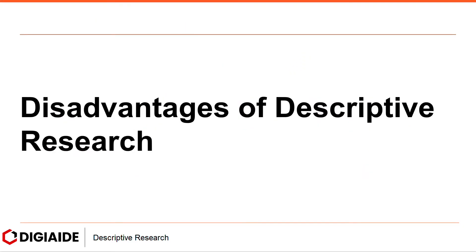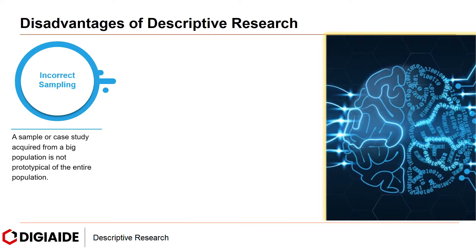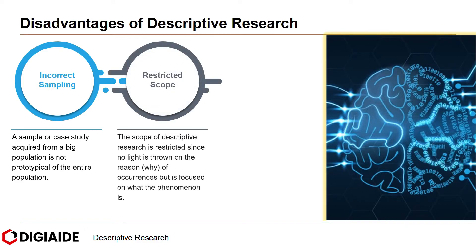Moving on to the disadvantages of descriptive research. First, there could be incorrect sampling. A sample or case study acquired from a big population is not the prototypical of the entire population. Next, restricted scope: the scope of descriptive research is restricted since no light is thrown on the reason — the why aspect — of occurrences, but is focused on what the phenomenon is.